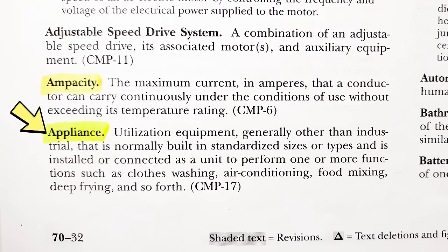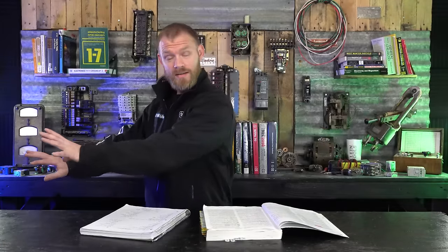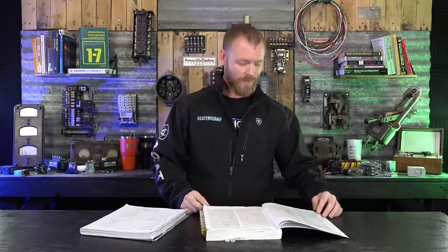Now, what is an appliance then? An appliance, it is utilization equipment, generally other than industrial, that is normally built in standardized types and sizes, and is installed or connected as a unit to perform one or more functions such as clothes washing, air conditioning, food mixing, deep frying, and so forth. So an appliance is generally something that's manufactured, right? Like a refrigerator is manufactured, it's got a cord on it. You buy it, you bring it in, you plug it in. It's not part of the premises wiring system. It's something you bring in and plug into the premises wiring system. And it's usually a pre-manufactured kind of thing.